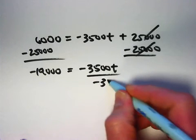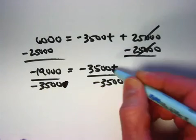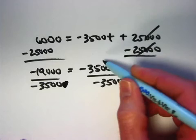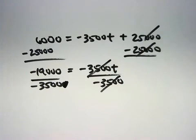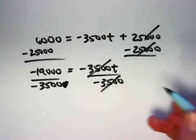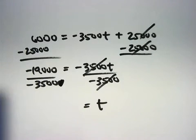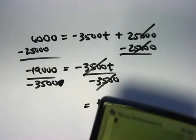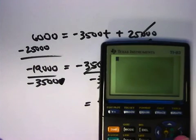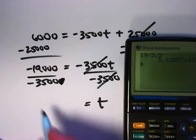Now divide both sides by negative 3,500. The negative 3,500s divide out. Sometimes you say cancel, but I think it's better to say divide out there. They become a 1 when you do that. 1 times t is just t. And on the left, the negative signs will divide out, if you will, because in a sense they're like 2 negative 1s. 19,000 divided by 3,500. That's, by the way, the same as 19 divided by 3.5. 5.43.